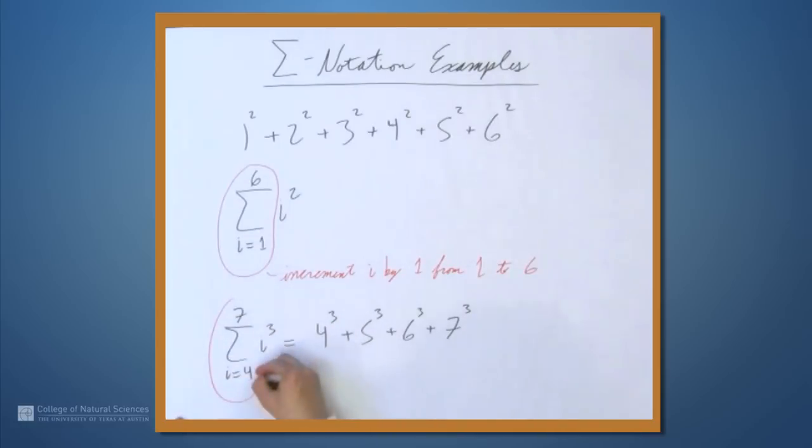So this, just like here, means increment i by 1. We're always incrementing it by 1. And now we're starting at 4 and we're going to 7. Okay, let's look at another example.